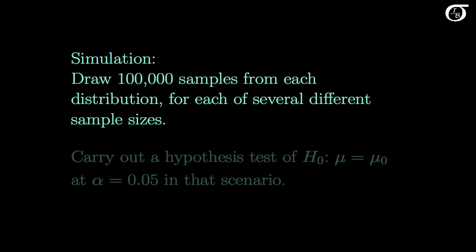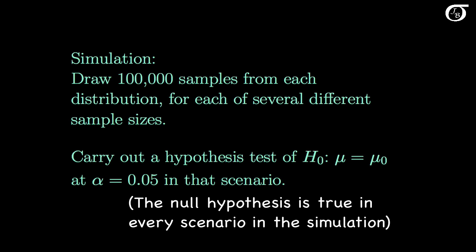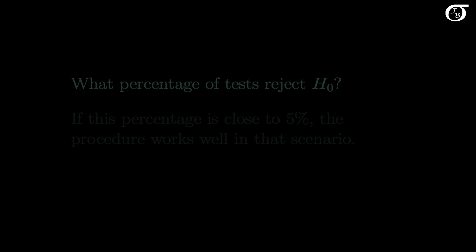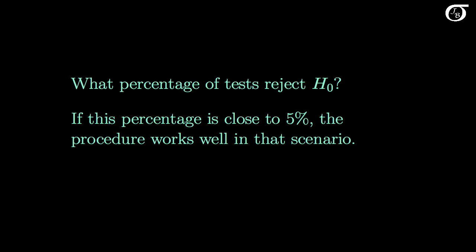We're going to draw 100,000 samples from each of those four distributions for each of several different sample sizes. Then we'll carry out a hypothesis test of the null hypothesis that mu equals mu0 at an alpha level of 0.05, where the null hypothesis is true in each case. We'll look at what percentage of tests reject the null hypothesis — if that percentage is close to 5%, the procedure is working well; if very different from 5%, it is working poorly.